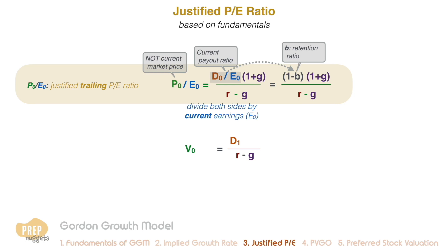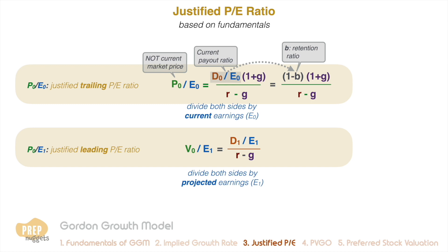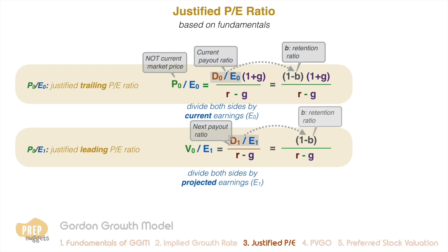However, since investments are often forward-looking, analysts are more interested in the justified leading PE ratio of a stock. Using the same approach, we divide both sides of the GGM equation by next year's projected earnings instead of the current earnings. In this case, we have the expected dividend payout ratio for the next period. Likewise, if the payout ratio is expected to remain constant, we can express it in terms of the retention ratio.